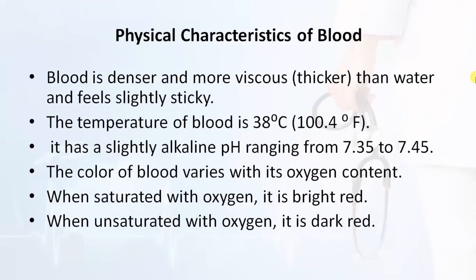Physical characteristics of blood: Blood is denser and more viscous — thicker than water — and feels slightly sticky. The temperature of blood is 38 degrees Celsius, that is 100.4 degrees Fahrenheit. It has a slightly alkaline pH ranging from 7.35 to 7.45. The color of blood varies with its oxygen content — when saturated with oxygen it is bright red, and when unsaturated it is dark red.